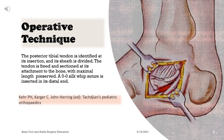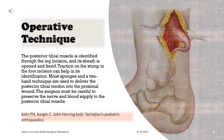The posterior tibial tendon is identified at its insertion and its sheath is divided. The tendon is freed and sectioned at its attachment to the bone with maximal length preserved. A 0-0 silk whip suture is inserted in its distal end. The posterior tibial muscle is identified through the leg incision and its sheath is opened and freed. Traction on the stump in the foot incision can help in its identification. Moist sponges and a two-hand technique are used to deliver the posterior tibial tendon into the proximal wound. The surgeon must be careful to preserve the nerve and blood supply to the posterior tibial muscle.